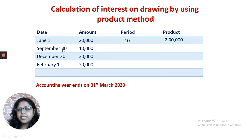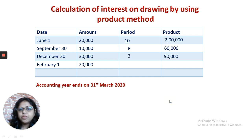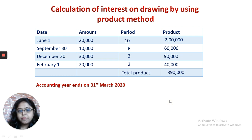For a withdrawal on 30th September, since it is the end of the month, counting starts from October: October, November, December, January, February, March — that is 6 months, and the product is 60,000. For December, counting gives 3 months and the product is 90,000. For February 1st, including February and March gives 2 months, so the product is 40,000. The total of all products comes to 3,90,000.